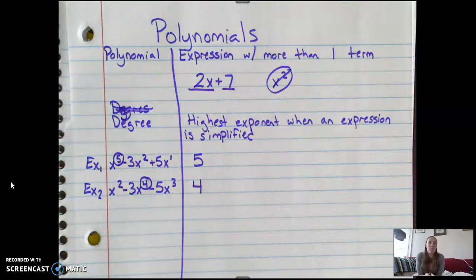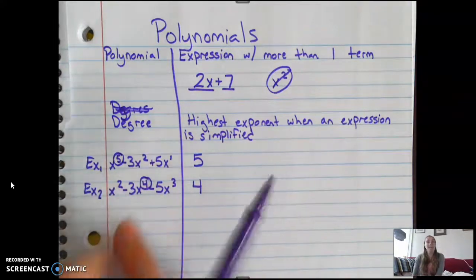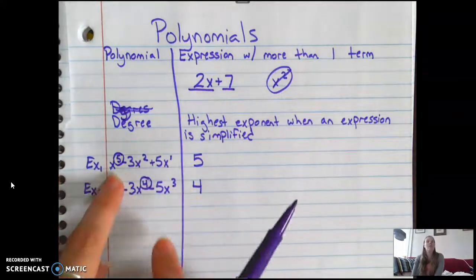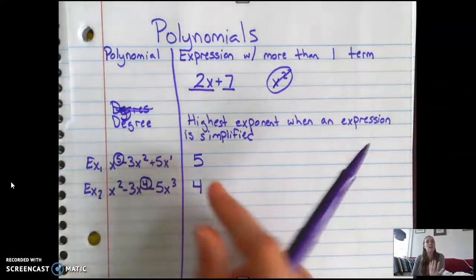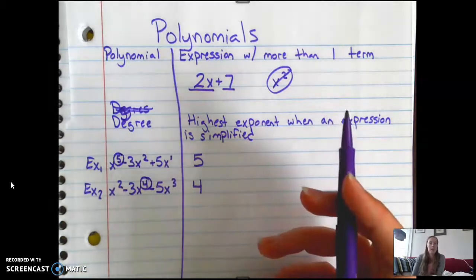That's why last week when I was talking about making it in a mathematically, grammatically correct order, that makes finding the degree easier. You don't have to search for it because if you put it in that order from greatest to least with the exponents, then you'll be able to see for sure what your degree is.